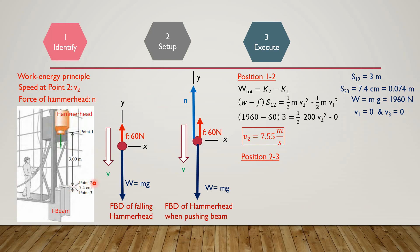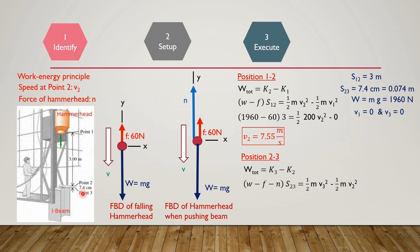Now consider positions 2 to 3. Velocity at 0.2 is V2 and velocity at 0.3 is V3. Applying the work-energy principle: total work done equals K3 minus K2. The net force between positions 2 and 3 is W minus f minus N, and displacement is S23 = 7.4 cm. So W_total = (W − f − N) × S23. K3 = ½MV3² and K2 = ½MV2².